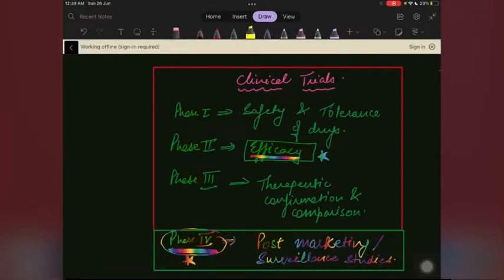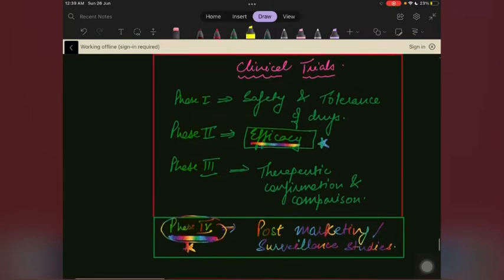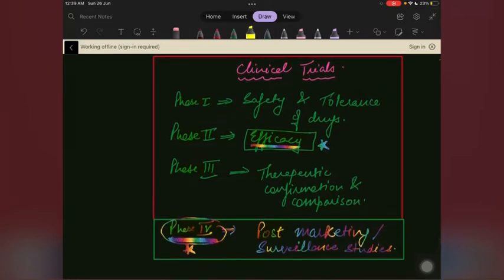Hi guys, welcome to my channel. Today we are going to do clinical trials. There are four phases of clinical trials. First of all, we have Phase 1. In Phase 1, safety and tolerance of drugs is checked.